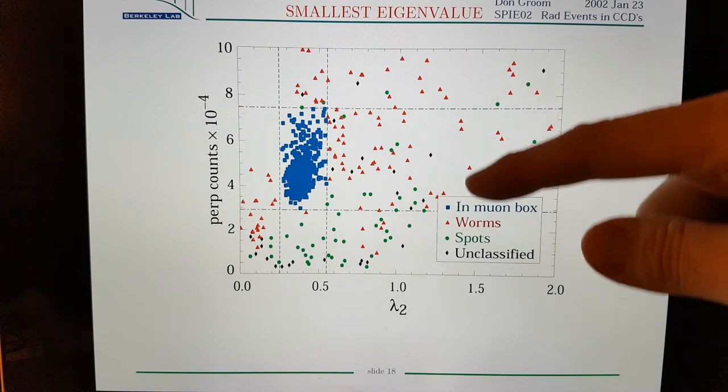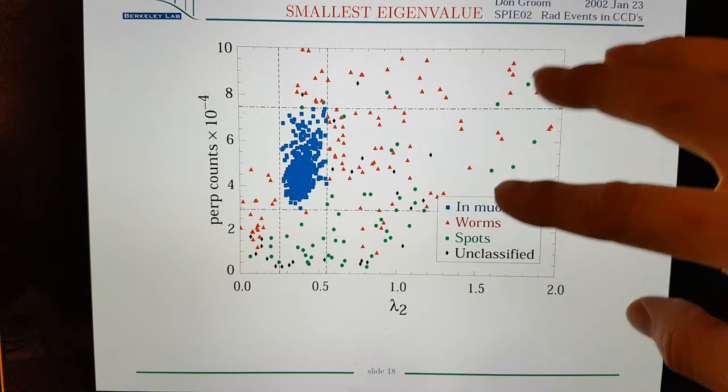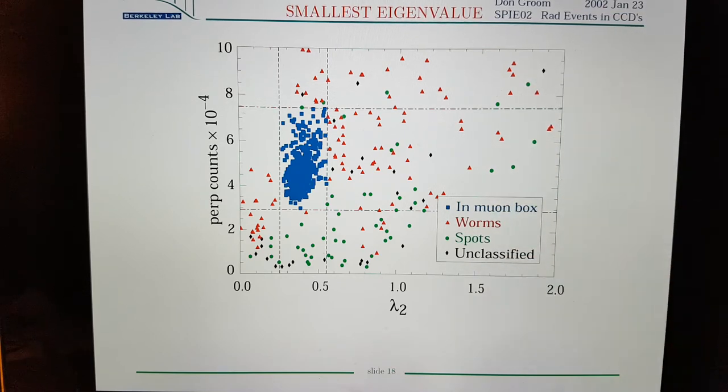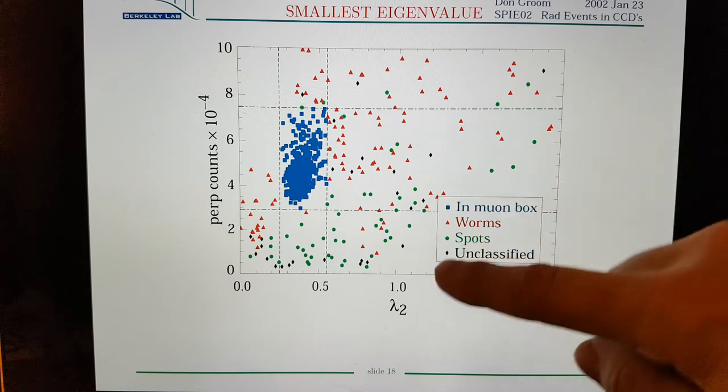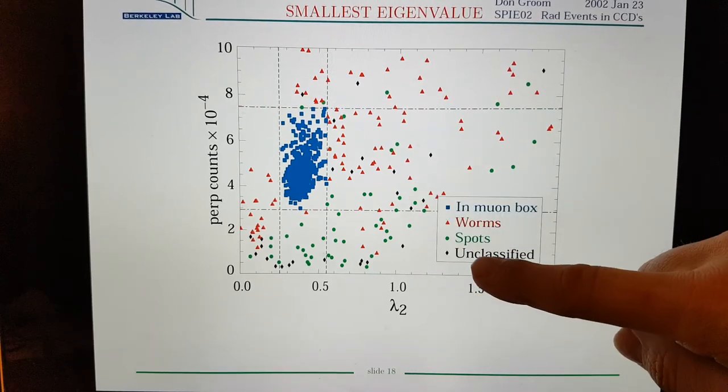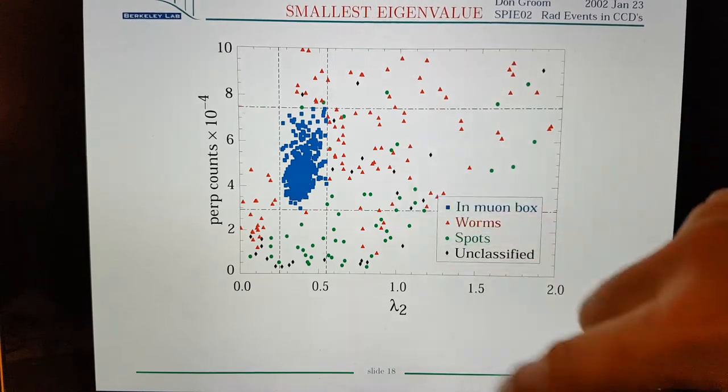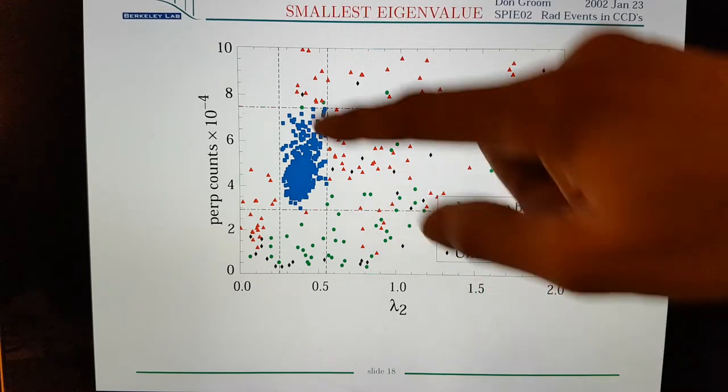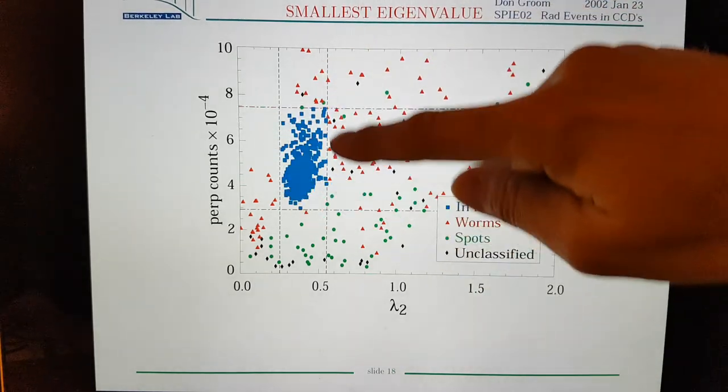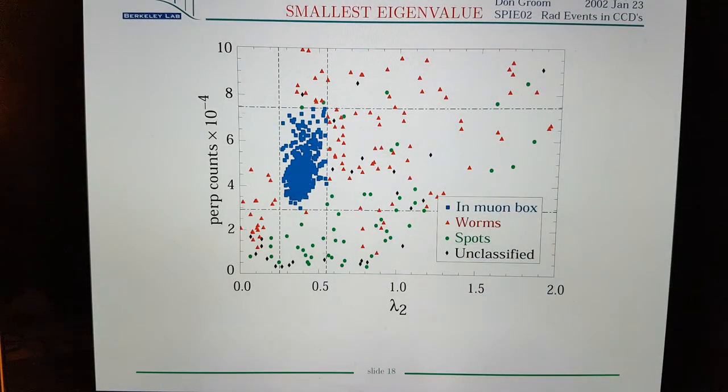Here's some analysis of some sampling. Unclassified, they don't know what that is. And these are worms, you can't class those as muons. And these are spots, so you can't really class those as muons. There's just this little range here of samples and tracks that you can classify as actual muons.